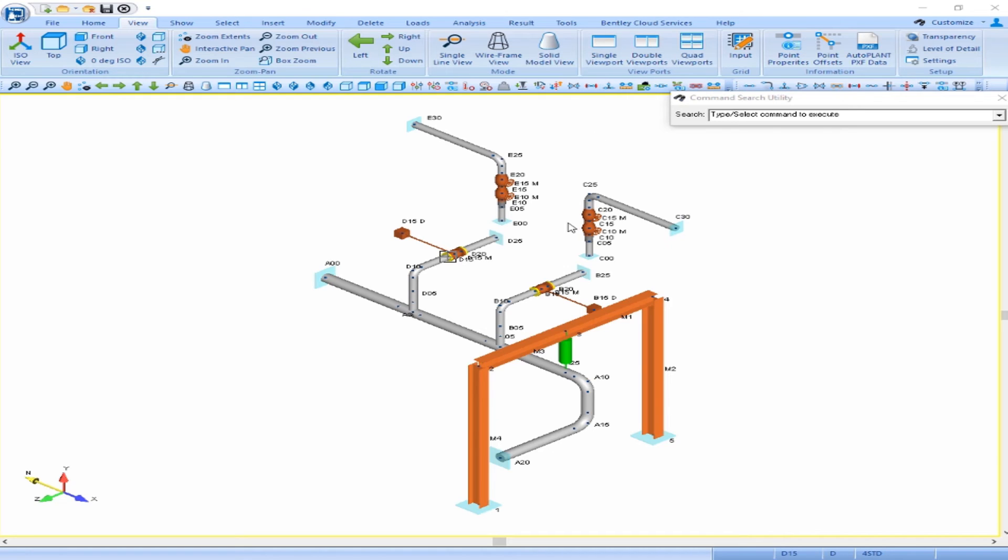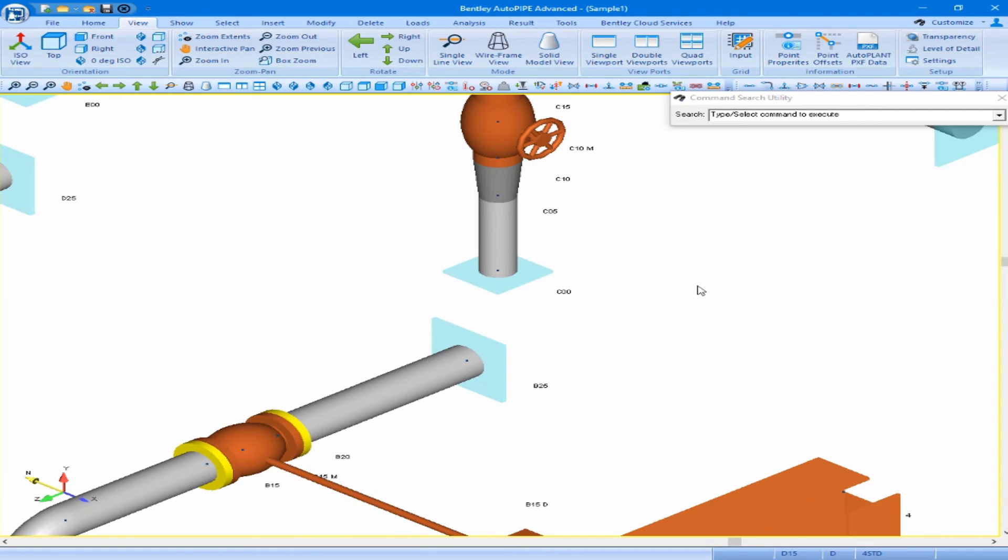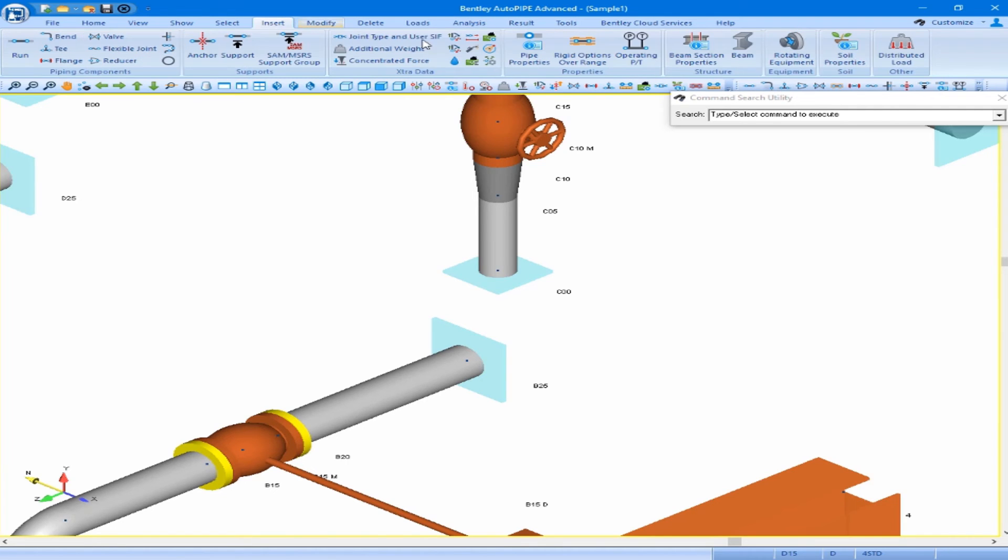So we'll zoom into the area between points B25 and C00 and we can insert our pump by coming to our insert ribbon and over to our rotating equipment button.